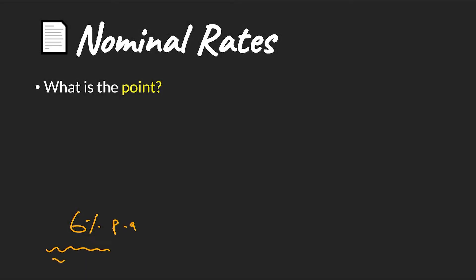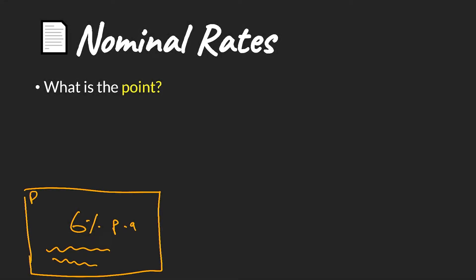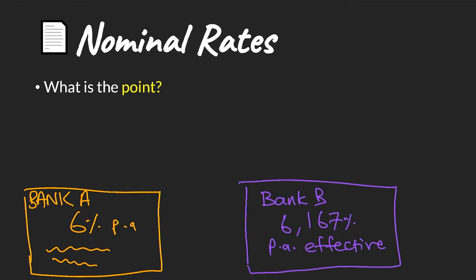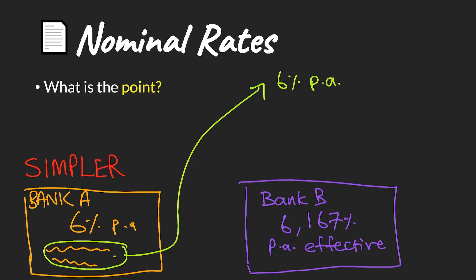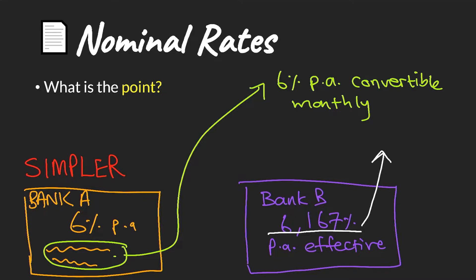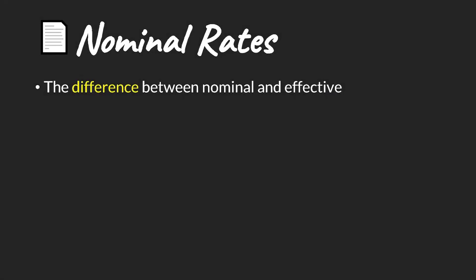So what's the point of all of this? Why do we have nominal rates if we need to use effective rates in our calculations? It really comes down to simpler marketing. If bank A advertises 6% per annum, it's a lot cleaner and simpler than bank B advertising an effective rate per annum. Even though technically that's what you will earn, it's considered more technical and less market friendly. So let's summarize the difference between the two rates.